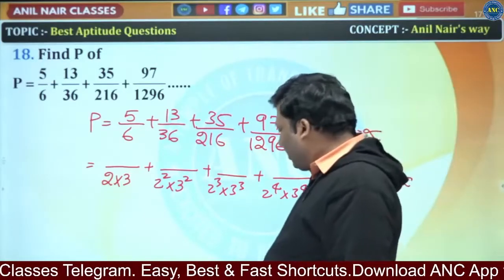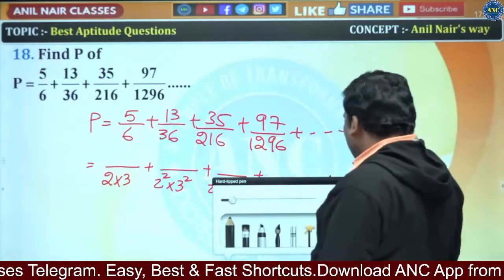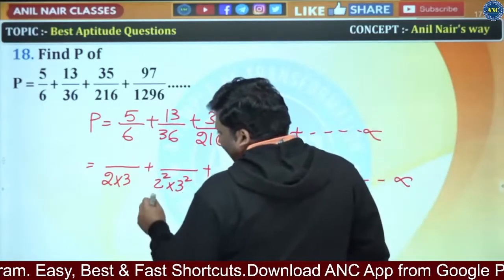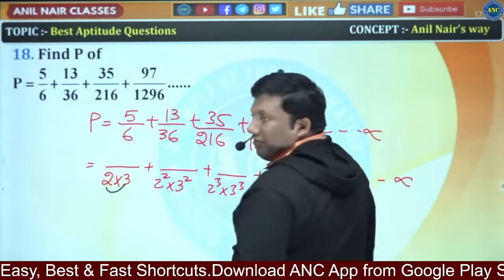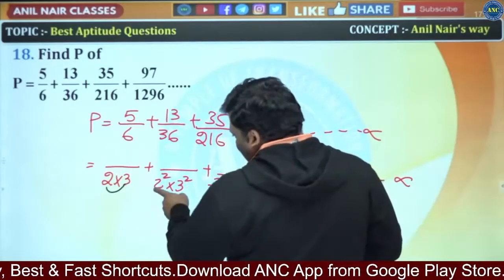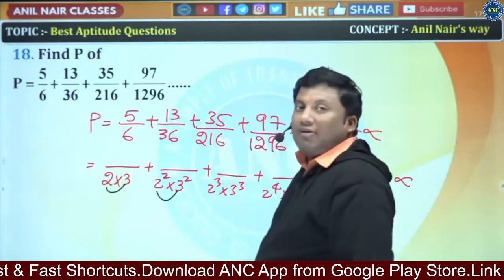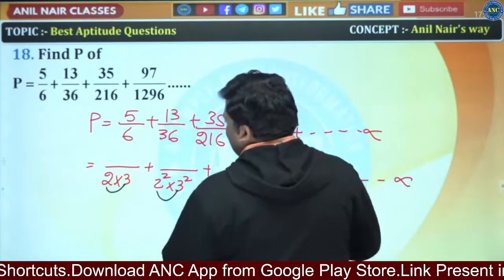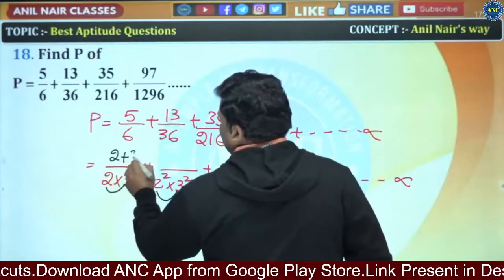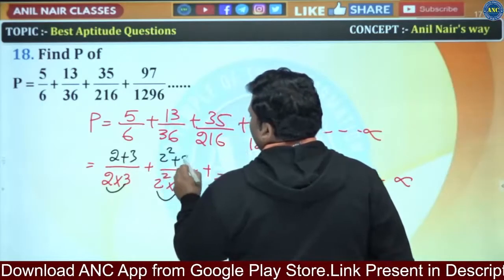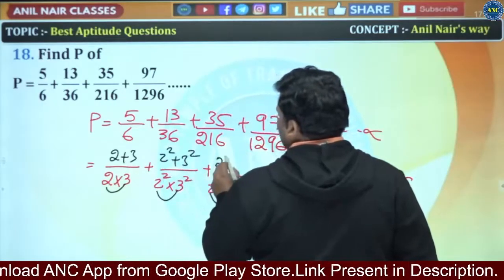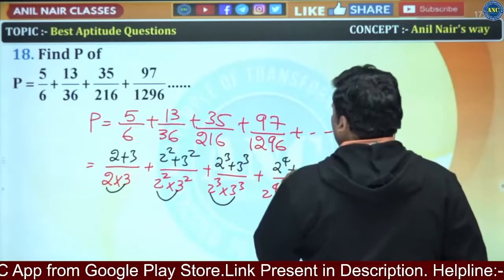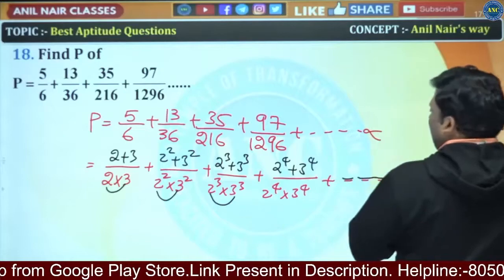Now for the numerators: 5 = 2+3, 13 = 2²+3² = 4+9, 35 = 2³+3³ = 8+27, and the next would be 2⁴+3⁴. So the numerator pattern is 2^n + 3^n, continuing up to infinite terms.